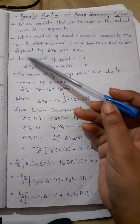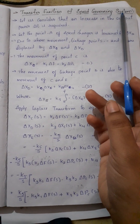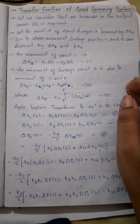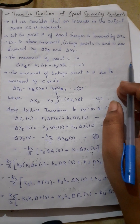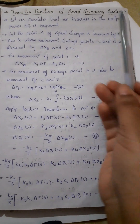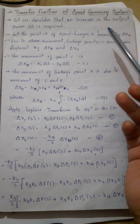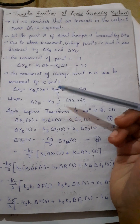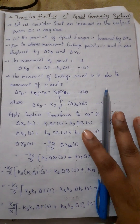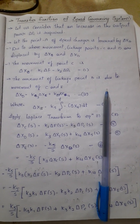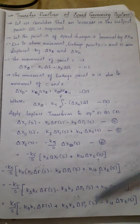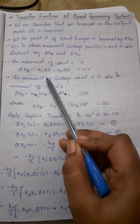We discussed the mathematical modeling of the speed governing system in the last video. Now we are discussing the transfer function of the speed governing system. The transfer function is derived and we have mentioned the block diagram. This is the transfer function model, and here we have three equations.